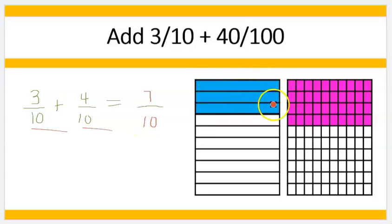If I were to take these 3 sections right here, or rather, if I were to take the 4 purple sections and color them in on my tenths chart, I could count my total of blue and reds, and I would come up with 7 tenths.